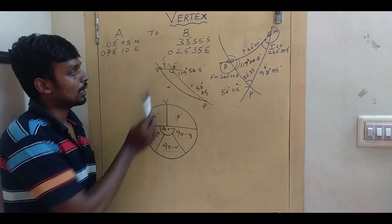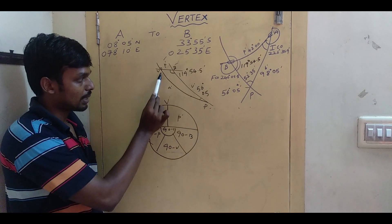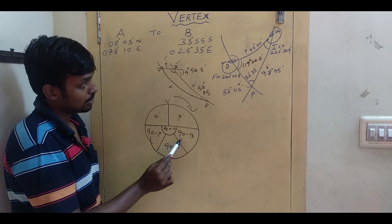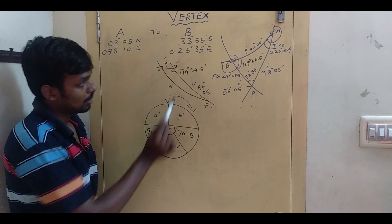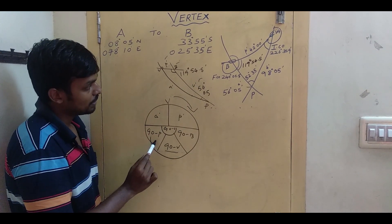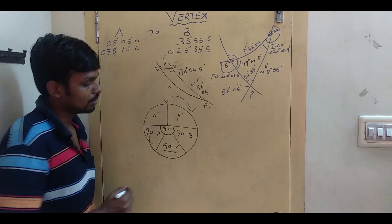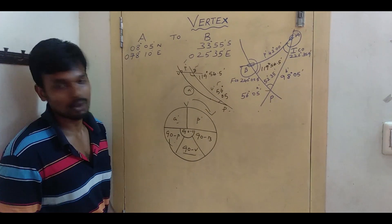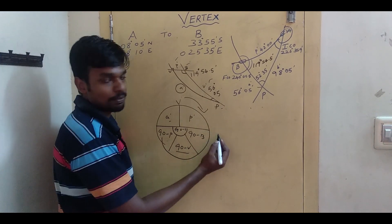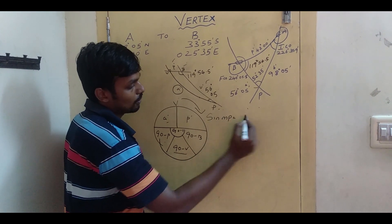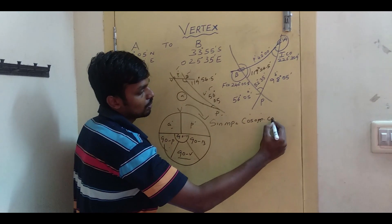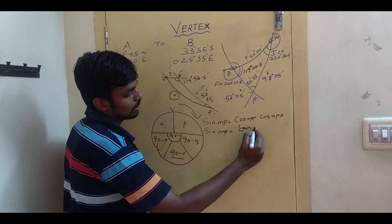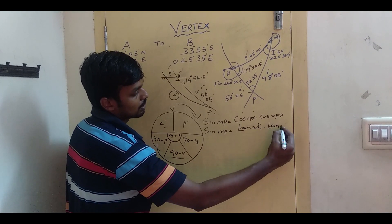V is the right angle — put it in the middle. Going clockwise: P', then 90° minus B, 90° minus B', 90° minus P, A'. We need A' to find the latitude and the P angle to find the longitude. Napier's rule: sine of mid part equals cosine of opposite times cosine of opposite, or sine of mid part equals tangent of adjacent times tangent of adjacent.